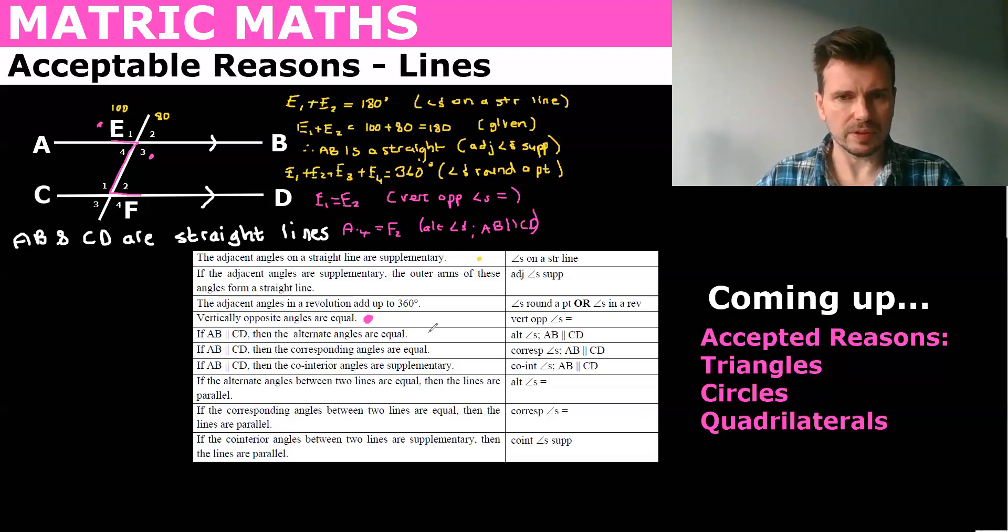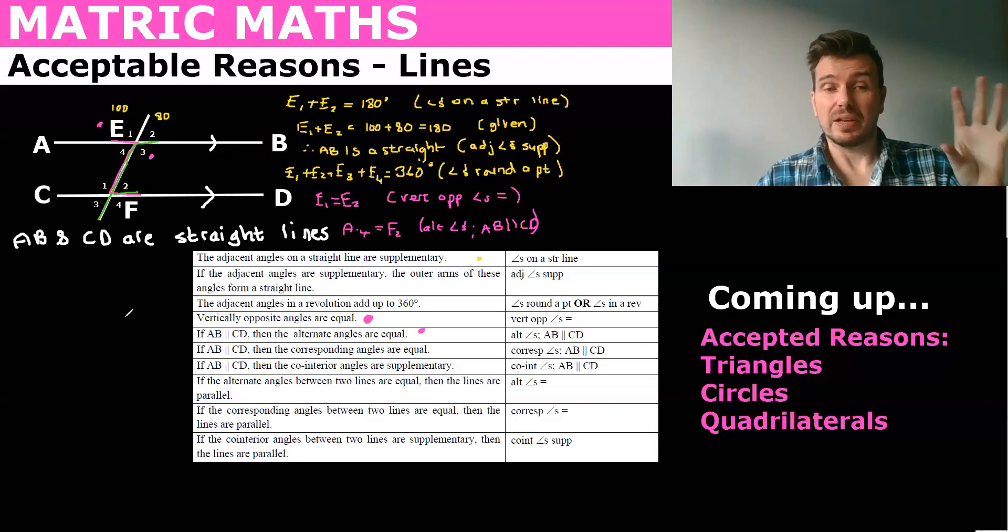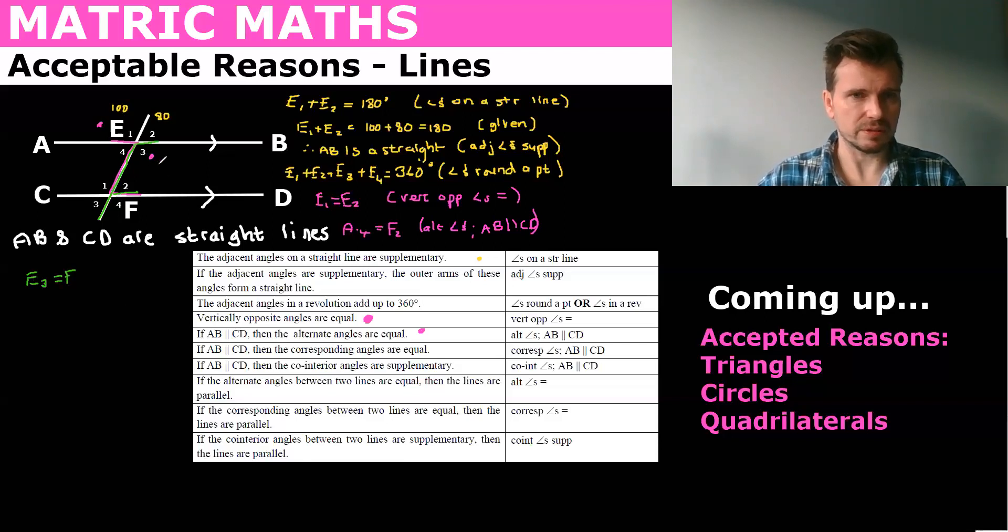Okay corresponding angles we're looking for our F so let's do that again. If this is a little bit basic I'm sorry but I would just need to go through it so that everyone knows it. And then we'll start to do the more complicated circle geometry which I think is probably what people are looking for help with. Okay so we're gonna say E3 equals F4 so these two are equal and the reason would be corresponding angles AB parallel to CD.